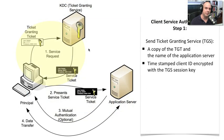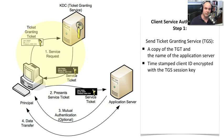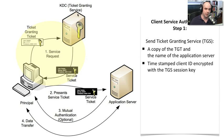Now that we're authenticated, we want to use resources on the network — specifically, an application server. But the application server has no idea we're on the network. We need a ticket from the Ticket Granting Service that will grant us access to that application server. From our client workstation, we take the encrypted TGT, attach the name of the service we want, and send that to the Ticket Granting Service along with a time-stamped client ID encrypted with our session key. The TGS can decrypt its own ticket and, knowing our password hash, can also decrypt the TGS session key.